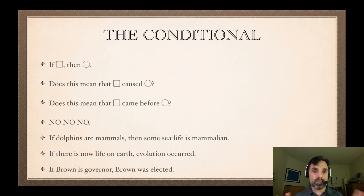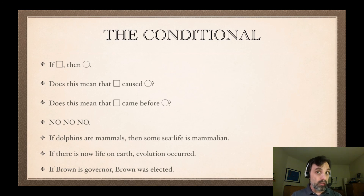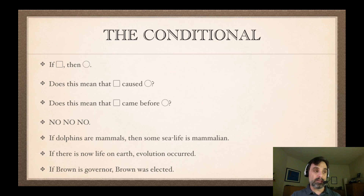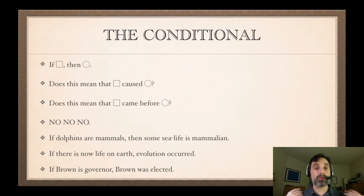These cases show that when we have a true conditional 'if square, then circle,' it might be that square caused circle — that the antecedent caused the consequent — and it might be that what makes the antecedent true comes before what makes the consequent true. But it doesn't have to be that way. The conditional doesn't mean that those things are the case. You can say them when they're true, but that's not what the conditional itself says.